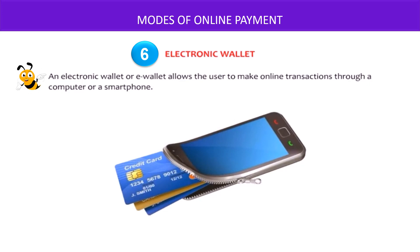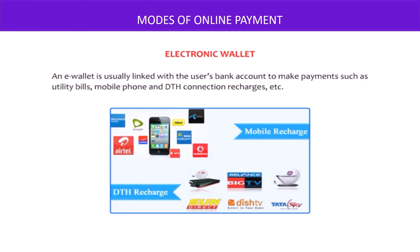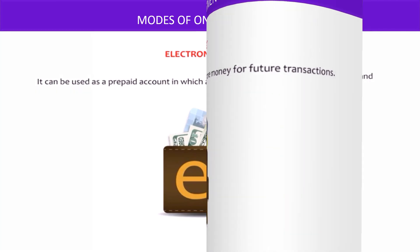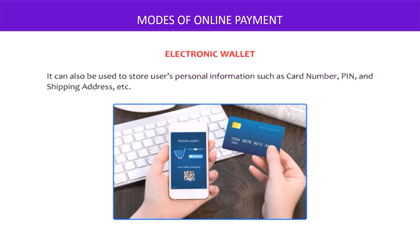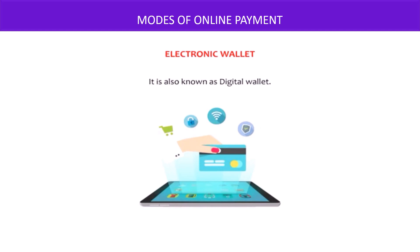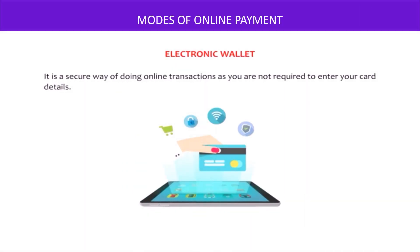Electronic wallet. An electronic wallet, or e-wallet, allows the user to make online transactions through a computer or a smartphone. An e-wallet is usually linked with the user's bank account to make payments such as utility bills, mobile phone, and DTH connection recharges, etc. It can be used as a prepaid account in which a user can store money for future transactions. It can also be used to store the user's personal information such as card number, PIN, and shipping address. It is also known as a digital wallet, and is a secure way of doing online transactions as you are not required to enter your card details.